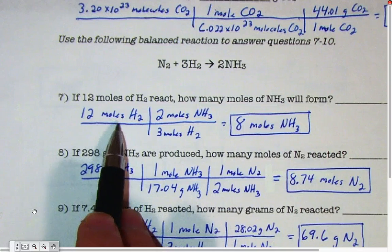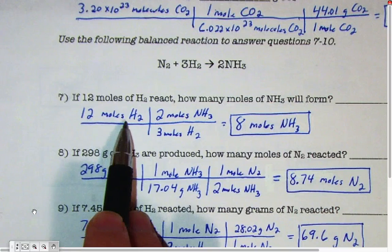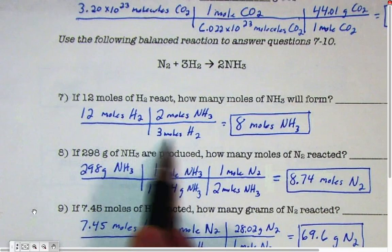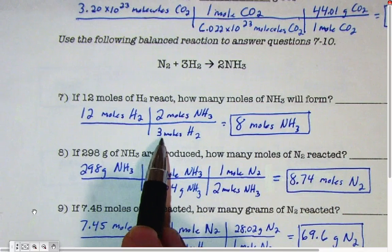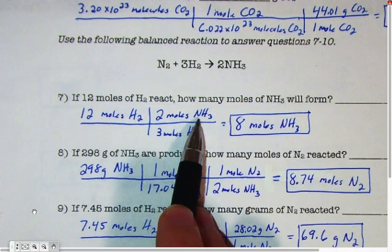Notice the number that goes with the chemical you started with is on the bottom. We knew 12 moles H2, we started with that. So the coefficient for H2 goes on the bottom. This 3, that coefficient that comes from here. And then above it goes the coefficient for the new chemical.